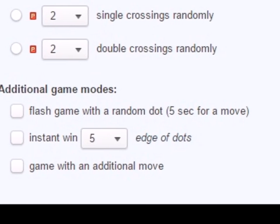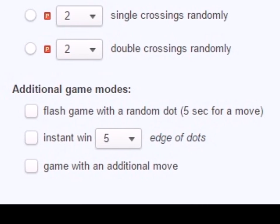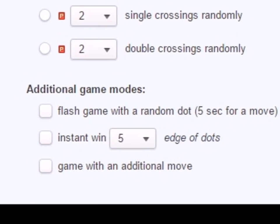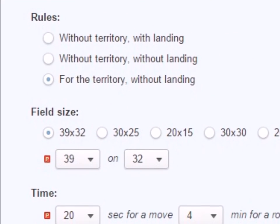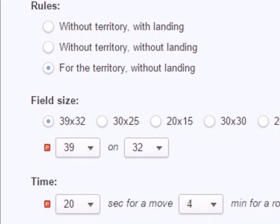There are several variants of the game rules different from the classic ones. For example, in Poland, the encircled crossings of lines are scored as well as the encircled dots. That's the game for territory.